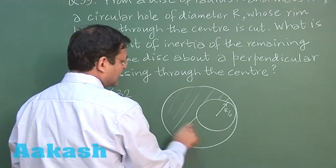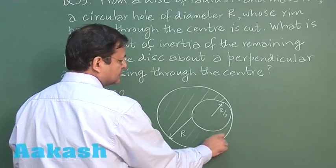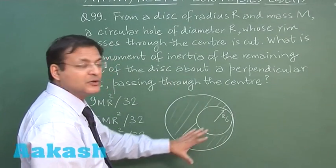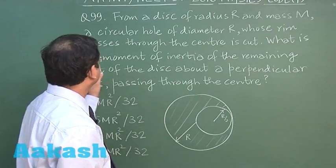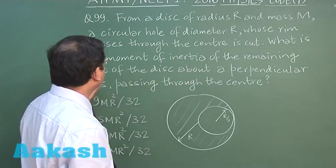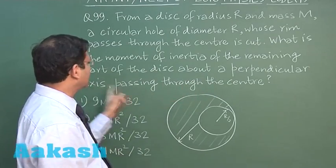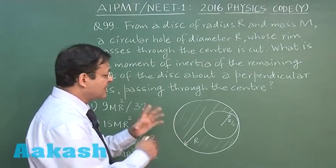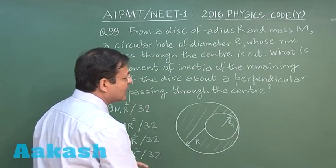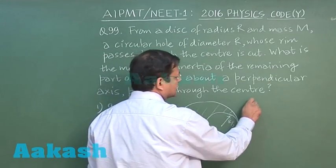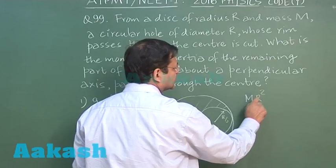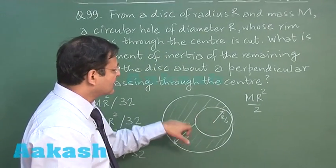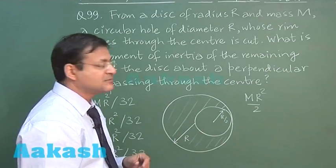So here you see this radius is r and this radius will be r by 2. So very much obvious thing is that the mass which has been cut out will be simply m by 4. So the remaining disc is something like this. This has been cut out and the axis is passing through the center and perpendicular to the plane of the disc. So you have to find out the moment of inertia of the remaining part of the disc about a perpendicular axis passing through the center. So very much obvious that in the beginning you had the moment of inertia mr square by 2. Out of which you have to subtract the moment of inertia of the disc which has been cut out.